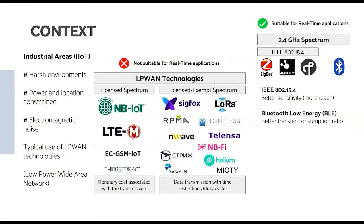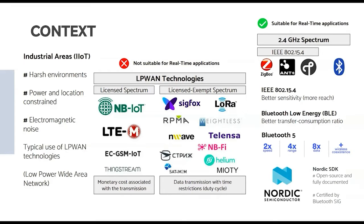Those belonging to the IEEE 802.15.4 standard, such as Zigbee, Z-Wave, or Thread, and Bluetooth Low Energy, which is widely used in IoT, mostly for short-range communication. Those belonging to the former standard offer better sensitivity and therefore more range than Bluetooth, while Bluetooth remains more energy efficient in data transmission. However, the release of Bluetooth 5 improved many aspects of the previous version, especially in range. Another key factor is the availability of an open source stack like the one offered by Nordic Semiconductor, with a very complete SDK, well documented and certified by the Bluetooth SIG, which helps notably in the development of such a specific project as this one.